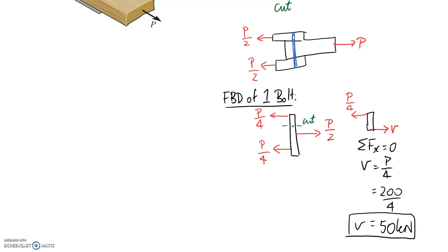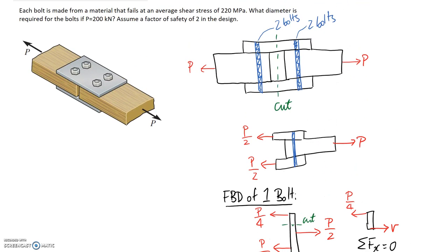Now that we know the shear force, we need to work out what shear stress we're going to be designing for. We're given information that we have a material which fails at 220 megapascals in shear, and we're also told that we're going to use a safety factor of 2 for the design. From this information, we should be able to work out our design stress or allowable stress. The equation for a safety factor is equal to the failure divided by the allowable.